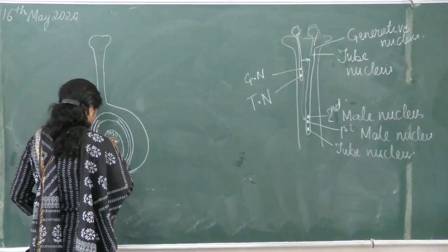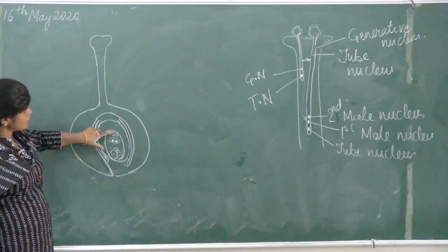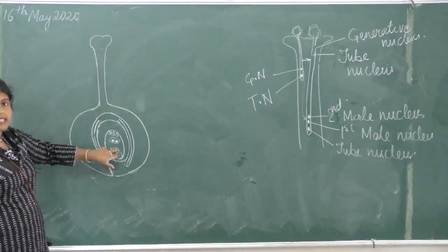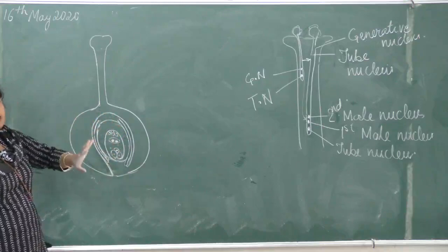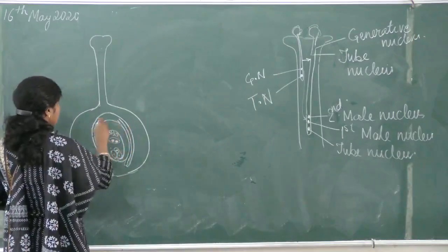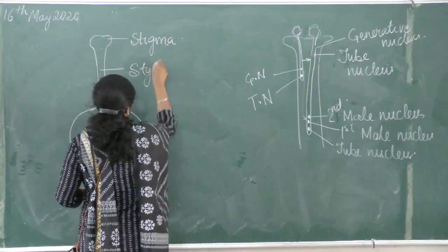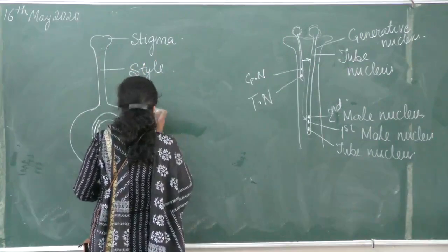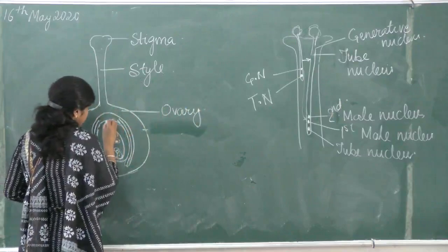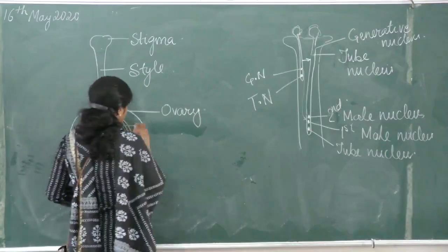Inside the embryo sac we find: three antipodal cells, one central cell with two polar nuclei, two synergids, and one egg cell — that is seven cells in total, out of which one cell contains two nuclei. Now labeling: this is the stigma, this is the style, this is the ovary, and this part consisting of nutritive cells is known as the nucellus.